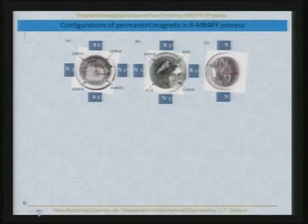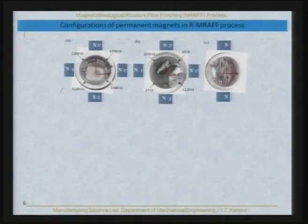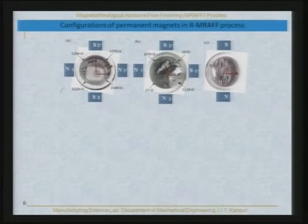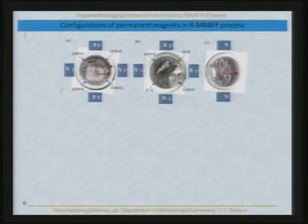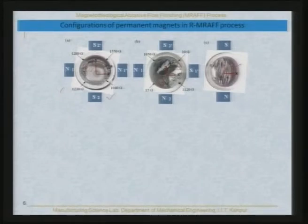There are various ways of placing permanent magnets in the R-MRAF process. One configuration has south-south poles opposite each other and north-north poles opposite each other — you can see a very uniform brush being formed all around. Another configuration with south-north and north-south poles shows non-uniformity in the brush. When only two magnets are used instead of four, again there is non-uniformity. The south-south / north-north configuration appears to be the better configuration as far as uniformity of brush formation is concerned.